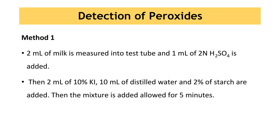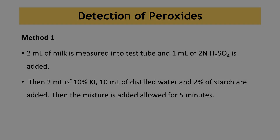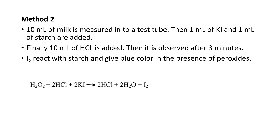Now let's see how to detect peroxides, which are used in milk to prevent spoiling. There are two methods. For Method 1, 2 ml of milk is measured in a test tube and 1 ml of sulfuric acid is added. Then 2 ml of 10% potassium iodide, 10 ml of distilled water, and 2% starch are added, and the mixture is allowed to stand for 5 minutes. For Method 2, 10 ml of milk is measured into a test tube, then 1 ml of potassium iodide and 1 ml of starch are added. Finally, 10 ml of HCl is added and it is observed after 3 minutes. I₂ reacts with starch and gives blue color in the presence of peroxide. Here you can see the chemical reaction.